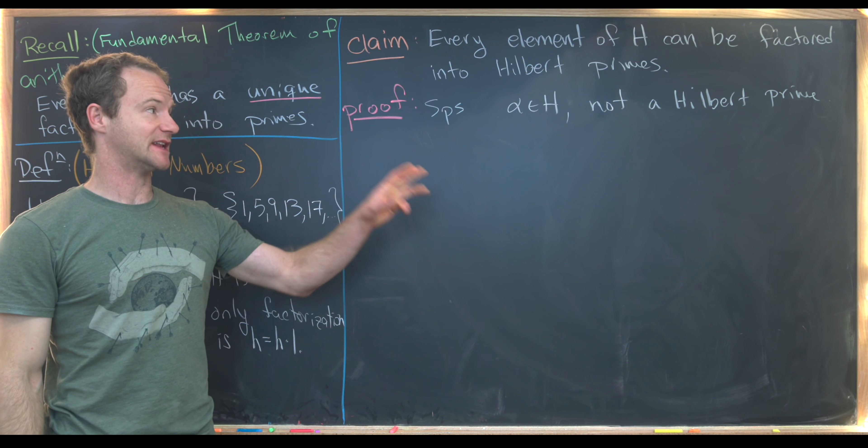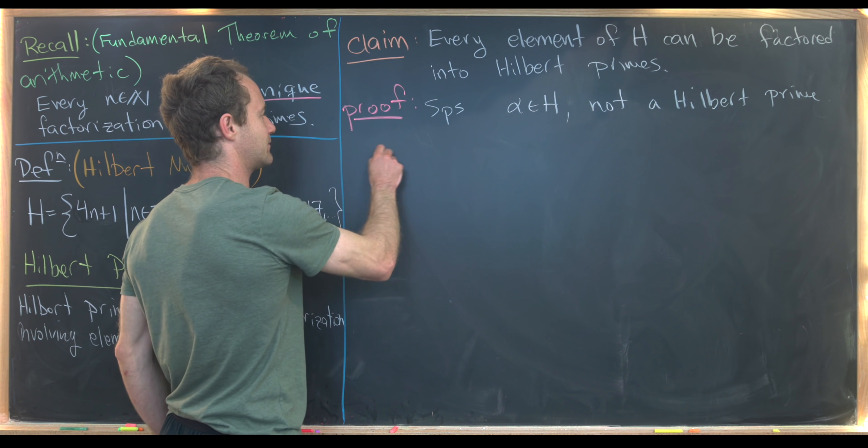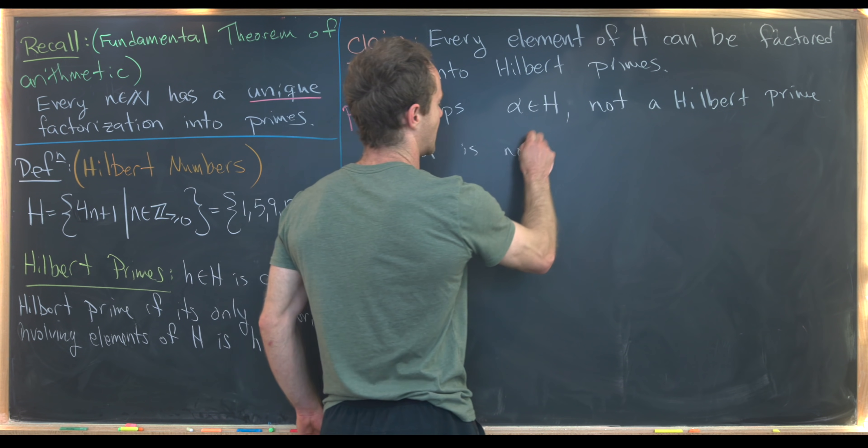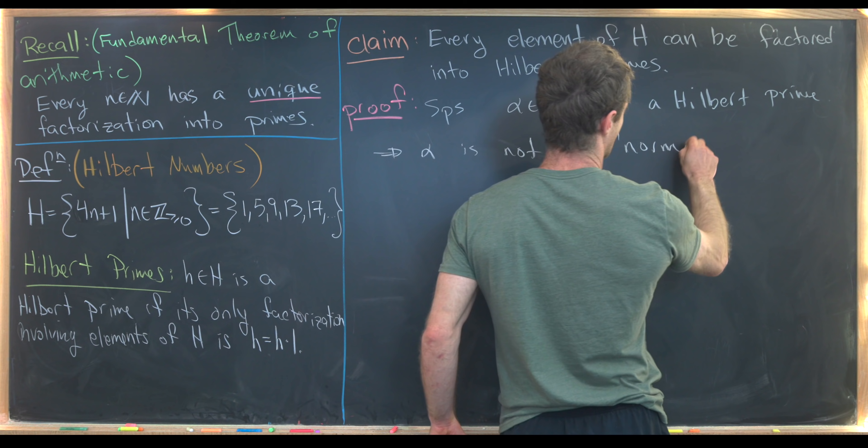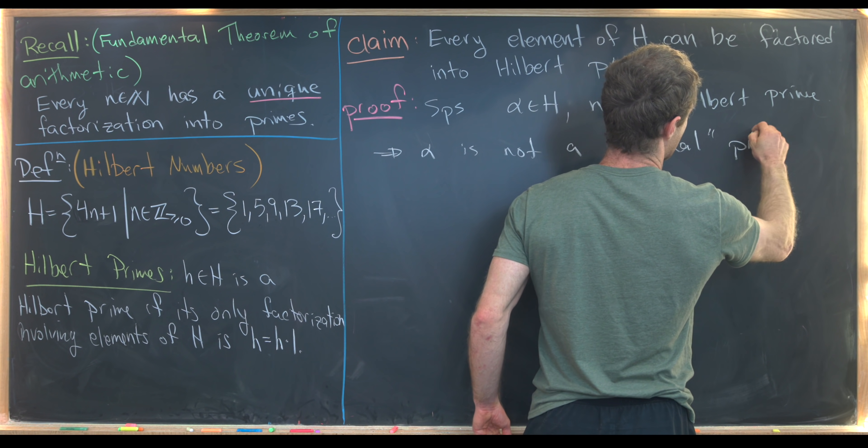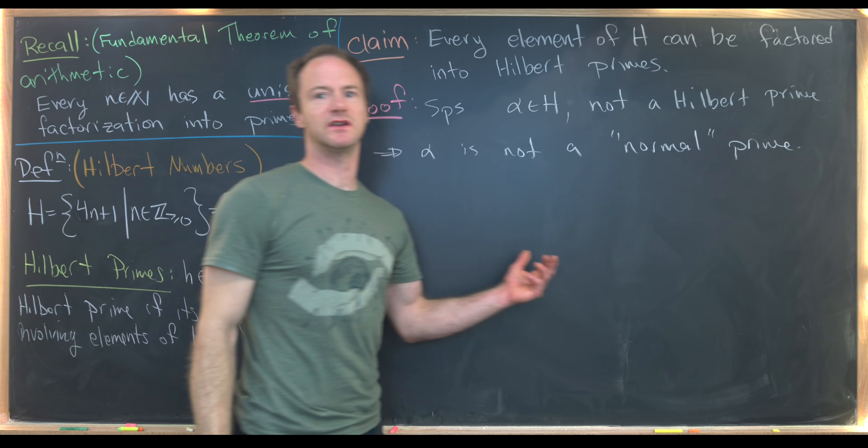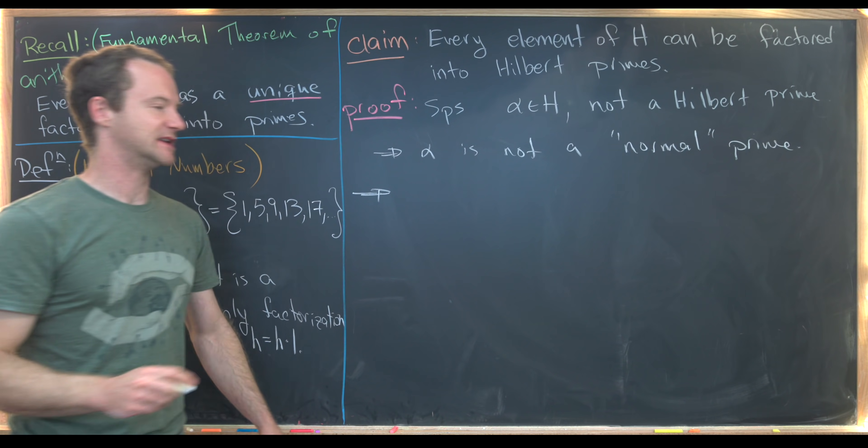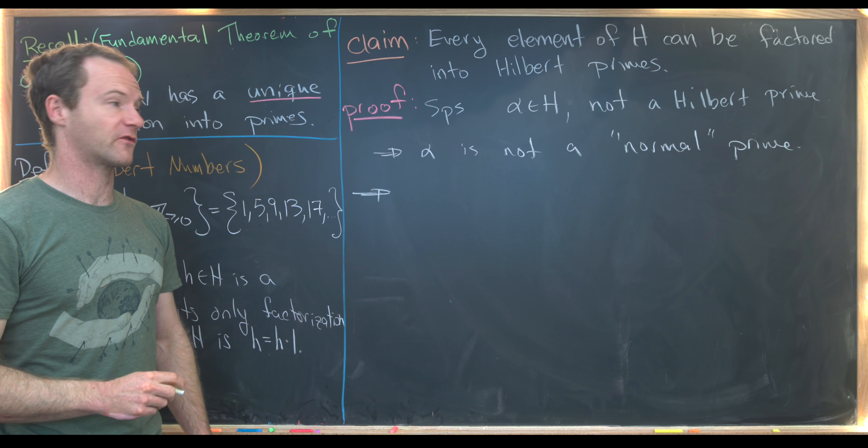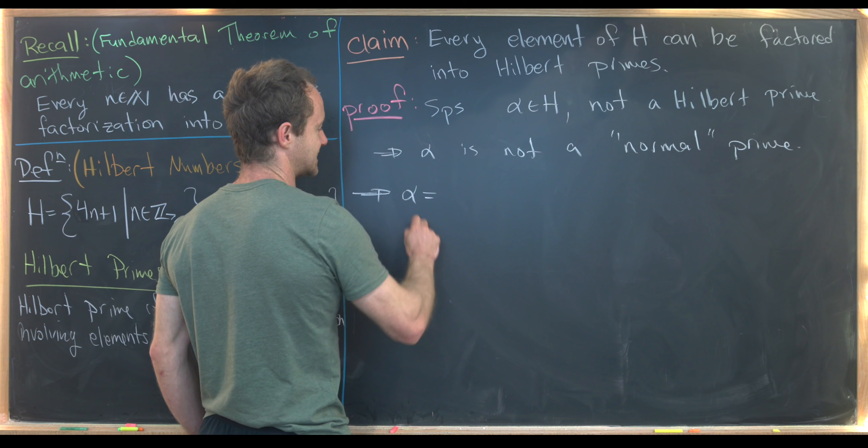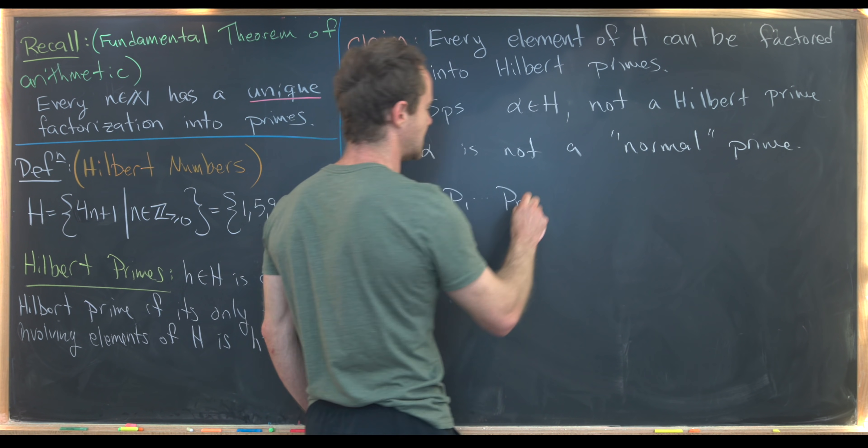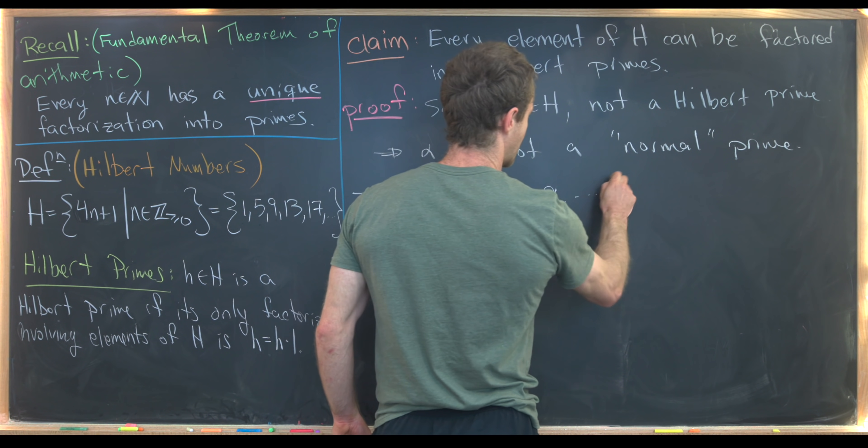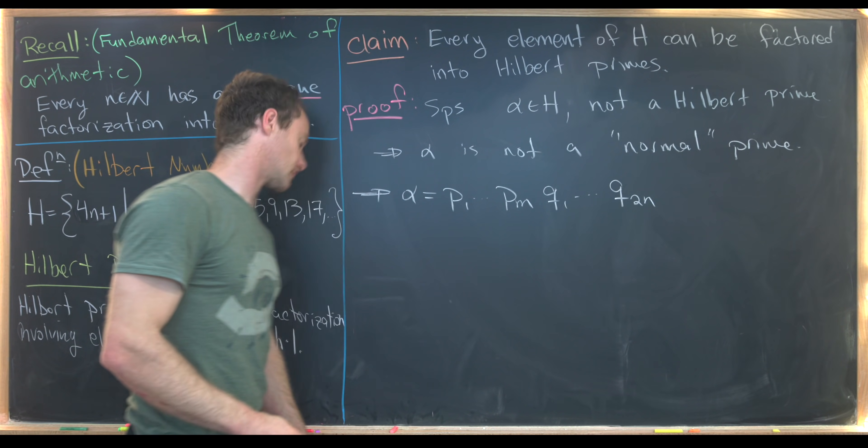So it's in H and it's not a Hilbert prime, but that implies that it's not a normal prime either. So I'll say it is not a normal prime. That means it's not a prime viewed as being just from the whole set of natural numbers. Now, next up, what I want to do is apply the fundamental theorem of arithmetic. That'll allow me to write this as alpha equals P1 all the way up to PM, where those are primes, and then Q1 all the way up to Q2N, where those are also primes.